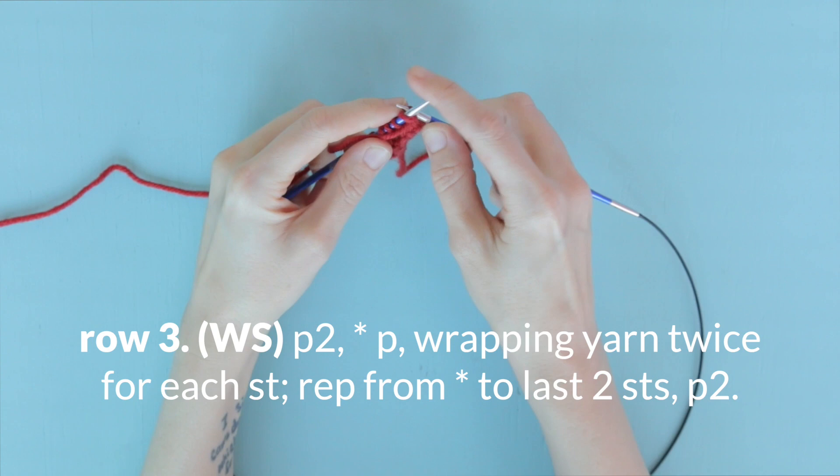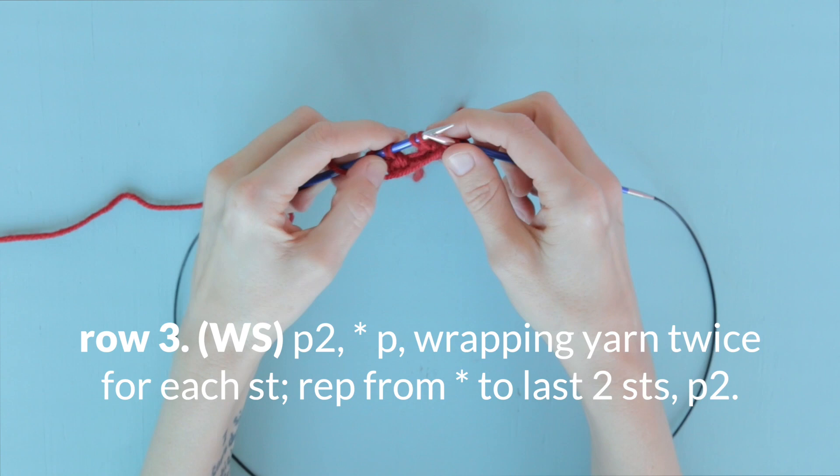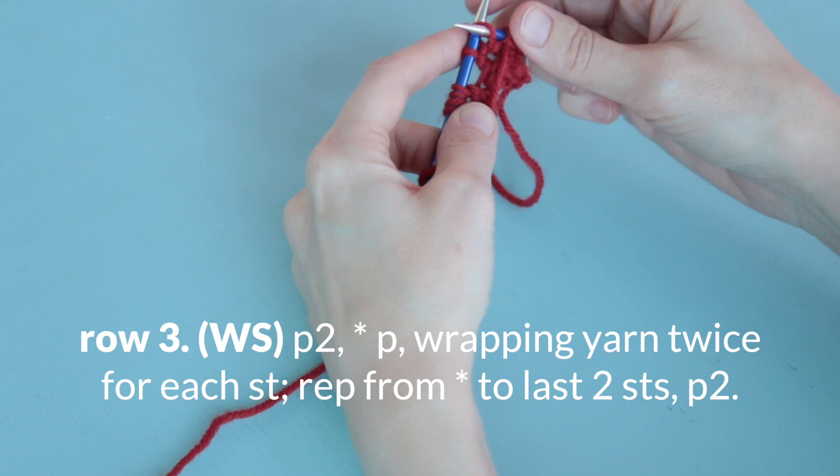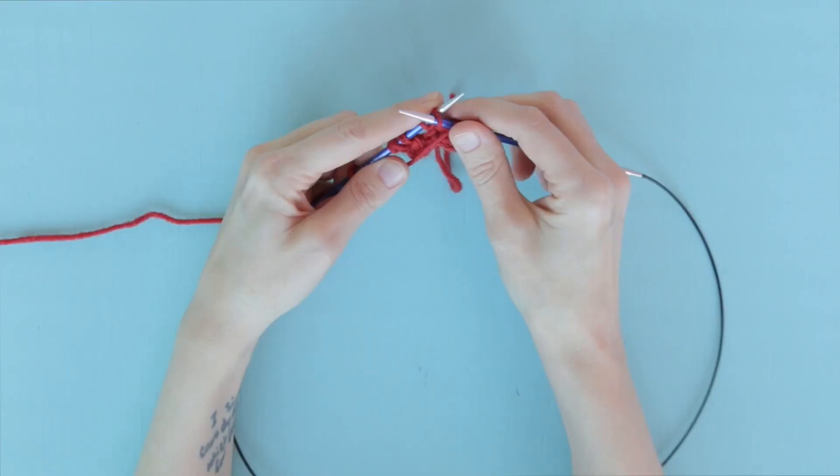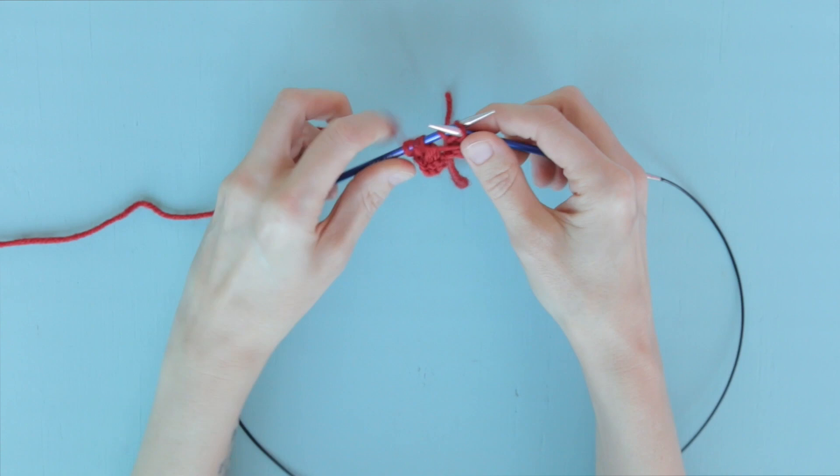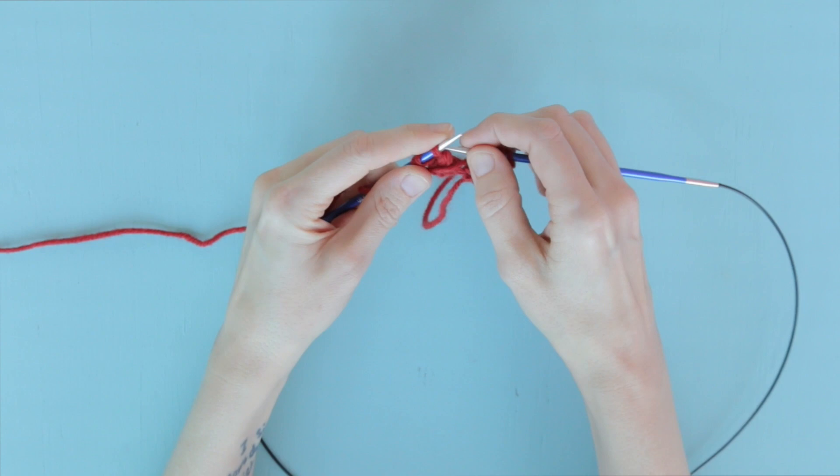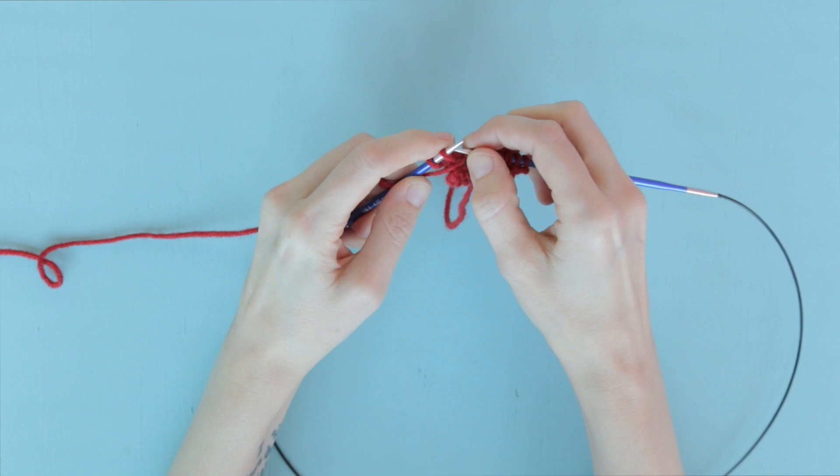And now for the rest of the row, except for the last two stitches, we are going to purl each stitch, but with two wraps per stitch. So that looks like this. Inserting your needle purlwise, wrap it twice. Without working too tightly, you then swing it under and you're done. Keep doing this action until there's just two stitches left in the row.